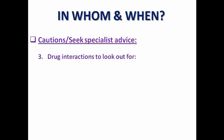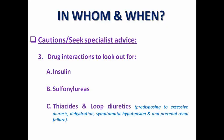There are drug interactions to watch for. Insulin and sulfonylureas may predispose to hypoglycemia when concomitantly prescribed with SGLT2 inhibitors. Thiazides and loop diuretics may predispose to excessive diuresis and dehydration, which can result in hypotension and pre-renal failure. That is why when prescribing SGLT2 inhibitors, we may need to reduce the diuretic dose.